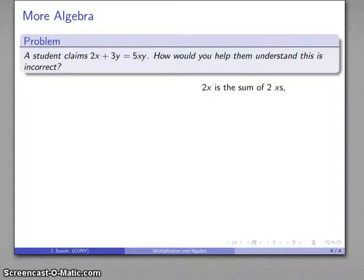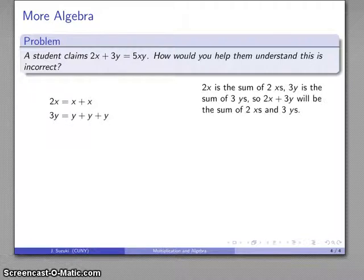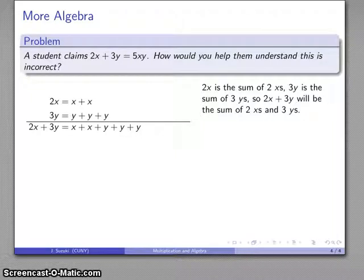So 2x, that's the sum of 2 x's. 3y is the sum of 3 y's. And if I add 2x and 3y together, addition is a putting together of two different things, and as I put these together, I get this thing. And there's not a whole lot I can do with that.